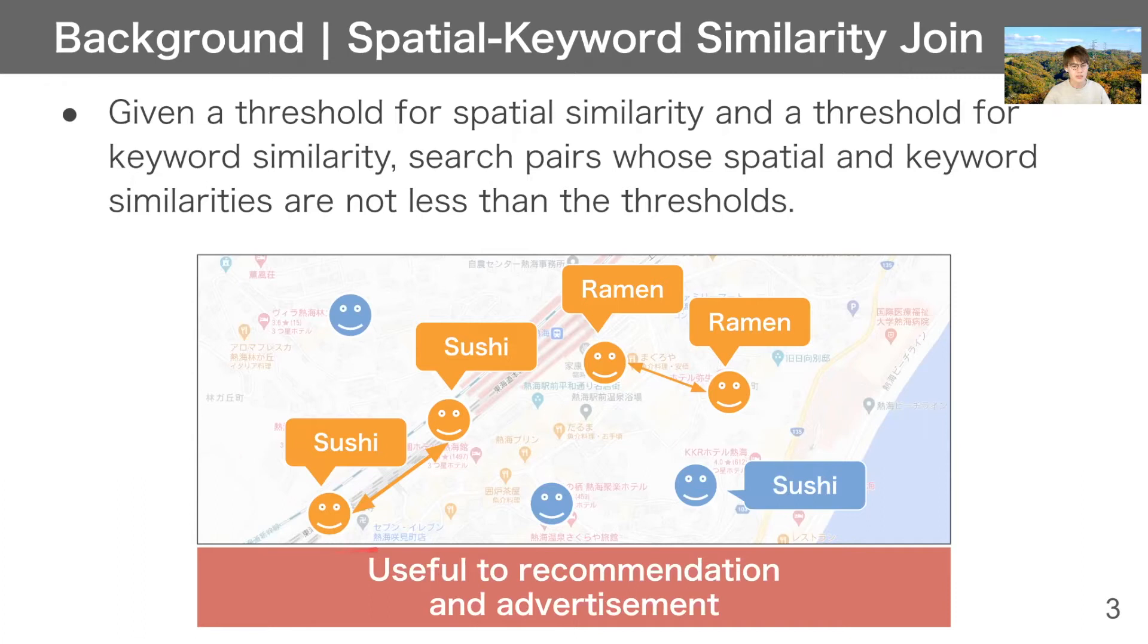This operation is very useful for recommendation and advertisement. For example, consider the situation that we want to recommend a sushi restaurant, and we assume that this user likes a sushi restaurant. By Spatial Keyword Similarity Join, we can know that this user is near this user and also likes sushi. Then we can recommend the same restaurant as this user to this user. This recommendation is likely to be effective.